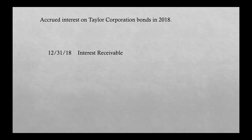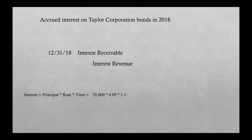Now we need to accrue the interest on the Taylor Corporation bonds for this year. We are the one making money on this interest, so we will debit Interest Receivable and credit Interest Revenue. To figure out the amount, we use the interest formula: principal × rate × time. Our principal was $35,000, our rate is 5%, and our time is one year. Multiply those together and you get $1,750 — that's what we record in our journal entry.